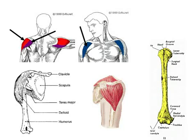All these unite in a thick tendon which is inserted into the deltoid prominence on the middle of the lateral side of the body of the humerus. From its point of insertion, the muscle gives off an expansion to the deep fascia of the arm.